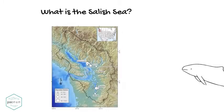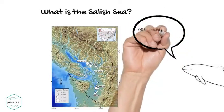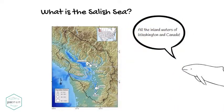You may be asking what is the Salish Sea? This includes the Puget Sound, the Strait of Juan de Fuca, and the Strait of Georgia.